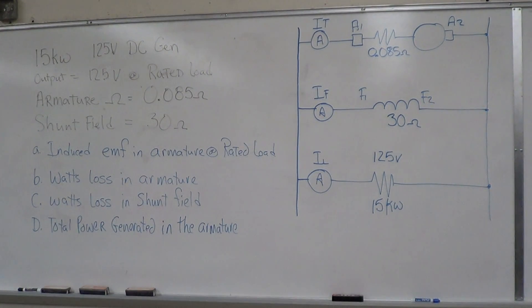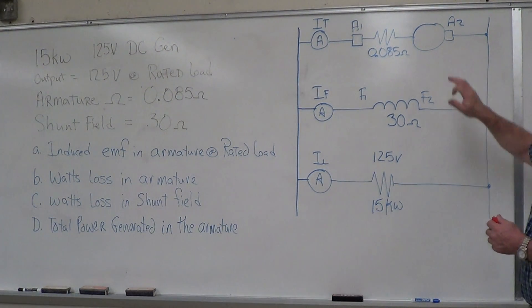We're given an armature resistance of 0.085 ohms, and a shunt field resistance of 30 ohms. They want you to calculate the induced EMF in the armature at rated mode, the watts loss in the armature, the watts loss in the shunt field, and the total power generated in the armature.